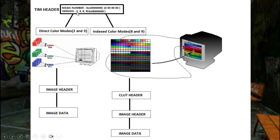The version number can be 2, 3, 8, or 9. Versions 2 and 3 are direct color modes; versions 8 and 9 are index color modes. Version 3 is extraordinarily rare, so look out primarily for 2, 8, and 9. So what does index color mode mean? Essentially, pixels on screen refer to a table of colors — a color palette — rather than storing full color information directly per pixel.